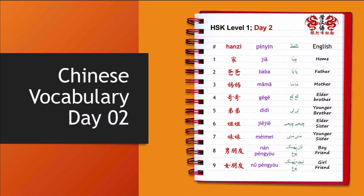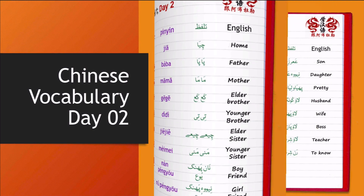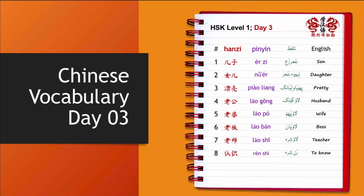Day 2 vocabulary: jiā (home/family), bàba (dad), māma (mom), gēge (older brother), dìdi (younger brother), jiějie (older sister), mèimei (younger sister), nánpéngyou (boyfriend), nǚpéngyou (girlfriend).